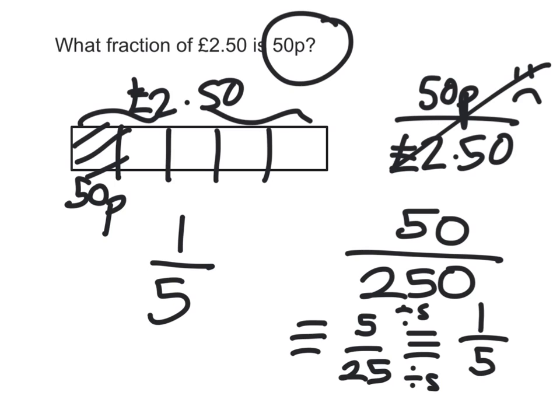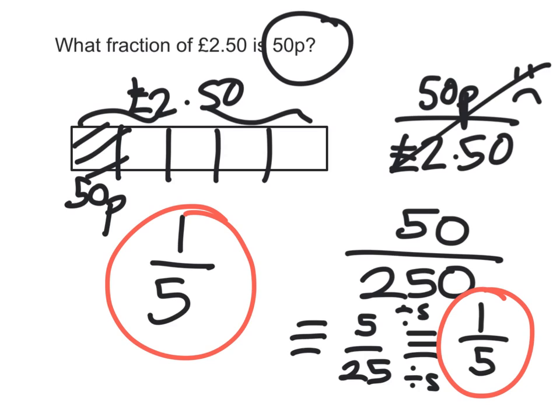It doesn't really matter which way you do, you find a way that works for you. Regardless of your method, you will end up with a fifth. So, if someone says, what fraction of £2.50 is 50p? The answer is, 50p is one-fifth of £2.50.